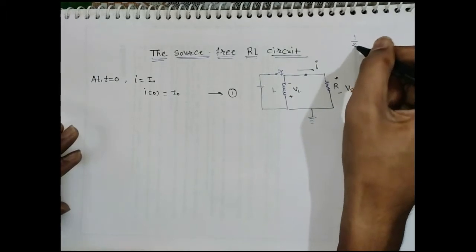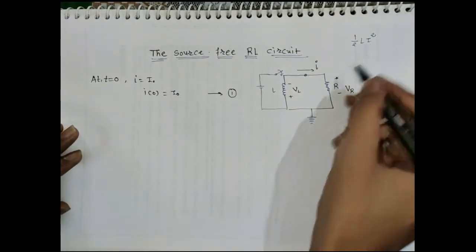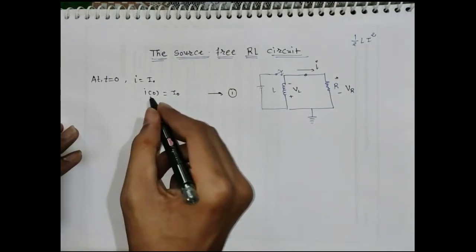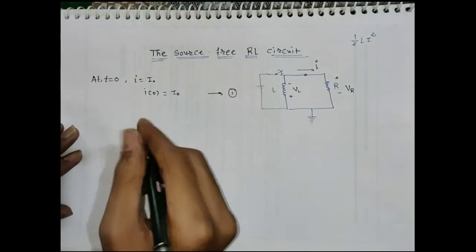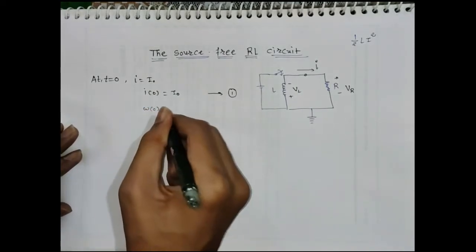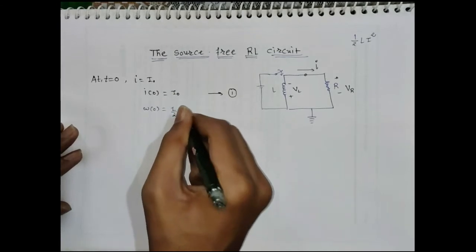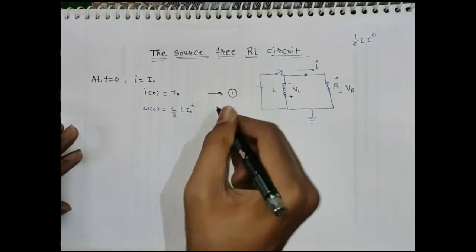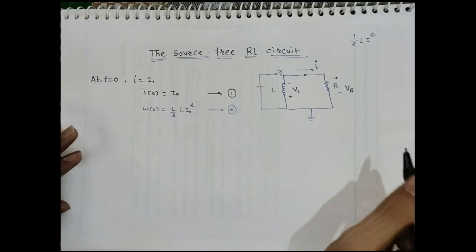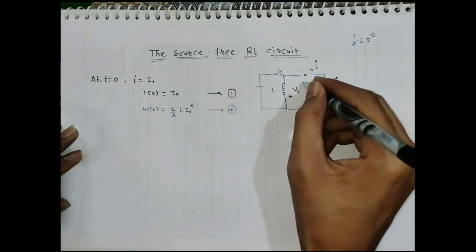The energy stored in the inductor is one-half L I². Here, at time t equals zero, the current value is I₀, so the initial stored energy W₀ equals one-half L I₀². Let us call this equation number 2. Now in this loop, let us apply KVL.